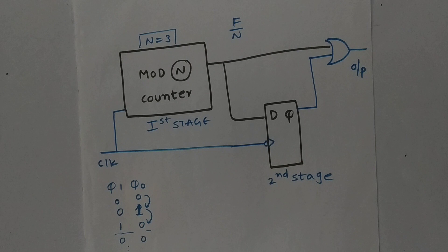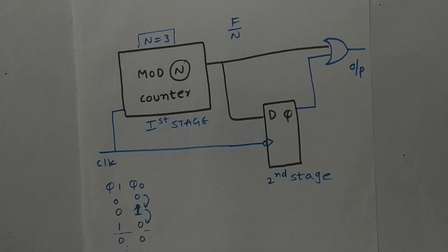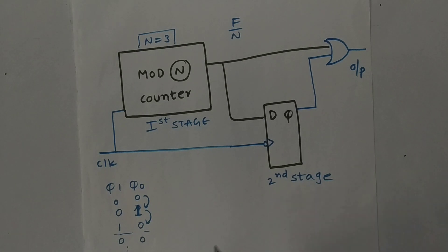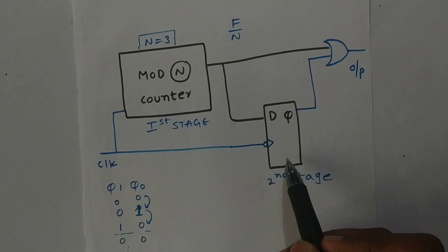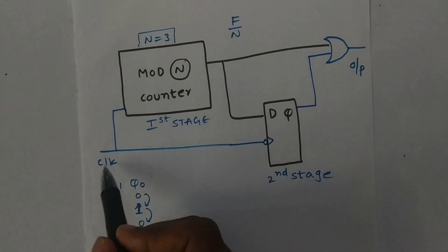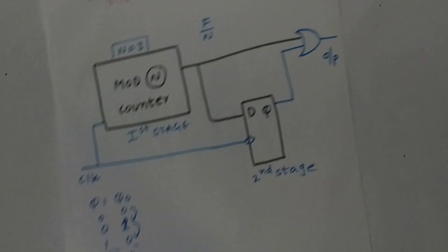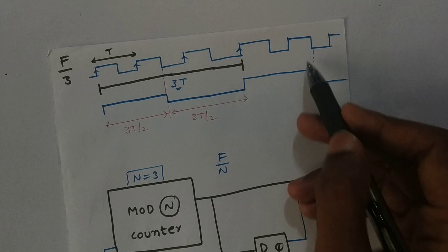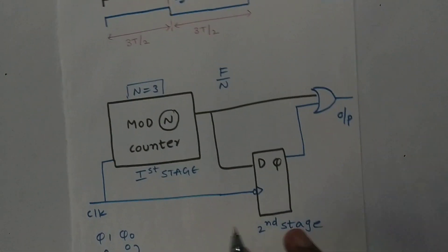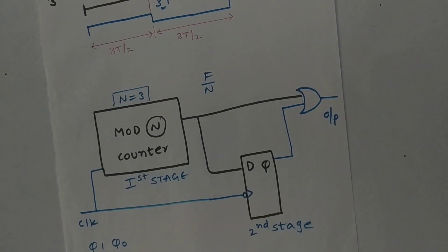This is the basic circuit diagram to get clock divided by 3. The circuit uses a mod-3 counter, a flip-flop, and an OR gate. The clock is the input and the output is clock divided by 3. This is the main clock and this is the output from this circuit. For a detailed explanation, check the description or the I button.